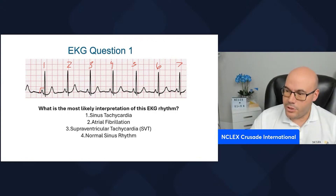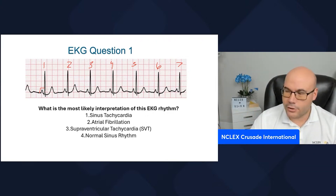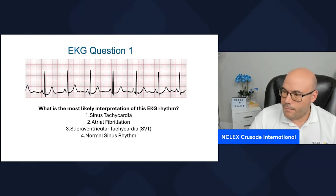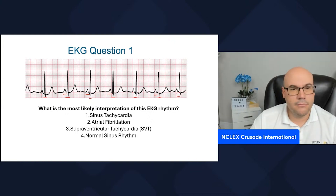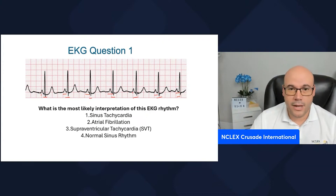The QRS interval — the space between the Q and the S — needs to be approximately less than 0.10 seconds, which it is, so we have a normal QRS interval. And we have a P wave for every QRS complex — P-QRS, P-QRS, throughout the strip. So if the rhythm is regular, the heart rate is normal, the PR interval is normal, the QRS interval is normal, and there's a P for every QRS and it's constant — we are in the presence of normal sinus rhythm.